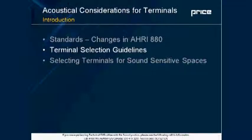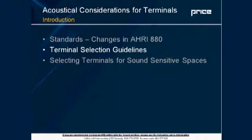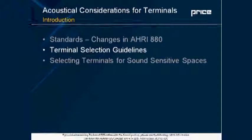Today I'll be talking about terminal selection guidelines, primarily focusing on the acoustical aspects. There are many factors to consider with terminal selection, but today we'll focus on acoustics. The terminal units we'll examine are single duct boxes and constant volume fan-powered terminal units. The factors we'll consider and their influence on acoustics are: flow rate, differential pressure, unit size, liner type, and sound attenuator silencers.